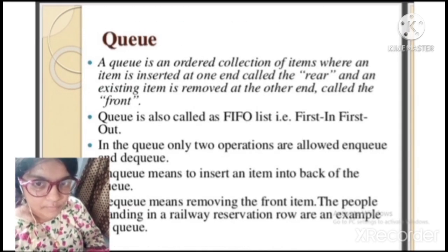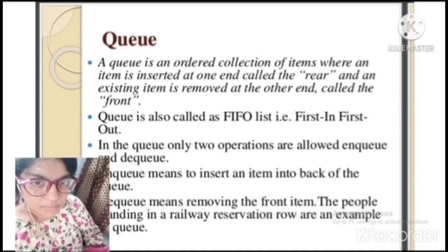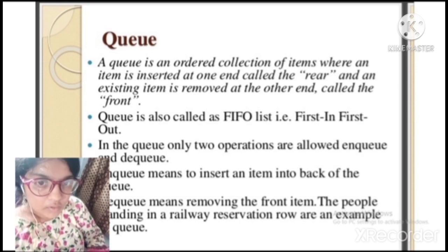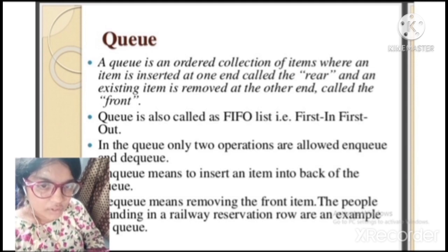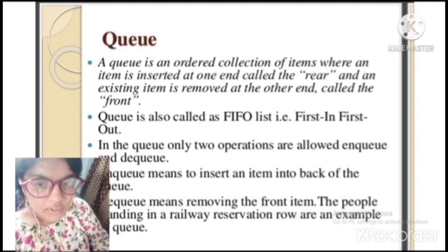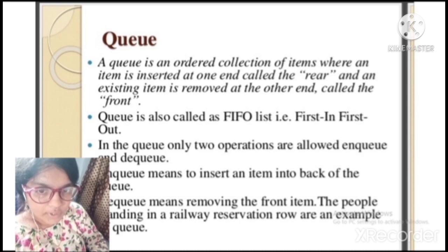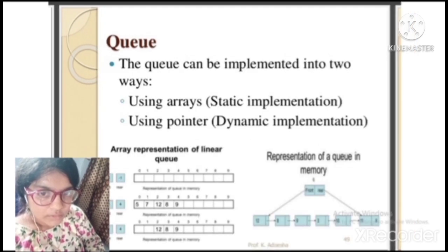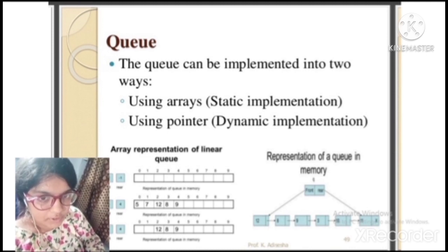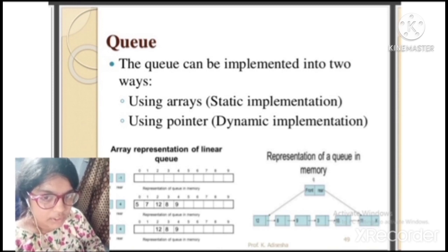Queue is an ordered collection of items where an item is inserted at one end (the rear) and an existing item is removed at the other end (the front). A queue is also called a FIFO list — First In, First Out. Only two operations are allowed: EnQueue (to insert an item into the back of the queue) and DeQueue (to remove the front item). The queue can be implemented using arrays (static) or using pointers (dynamic).